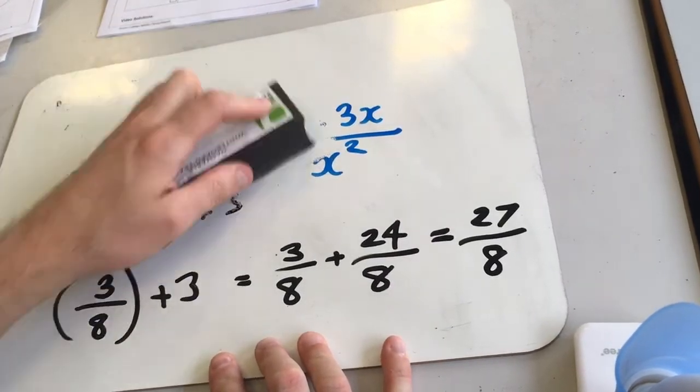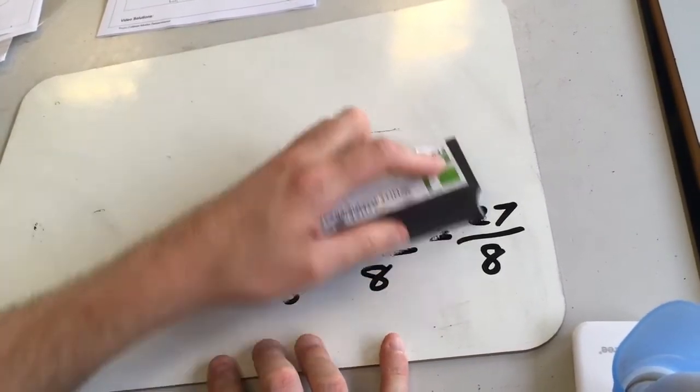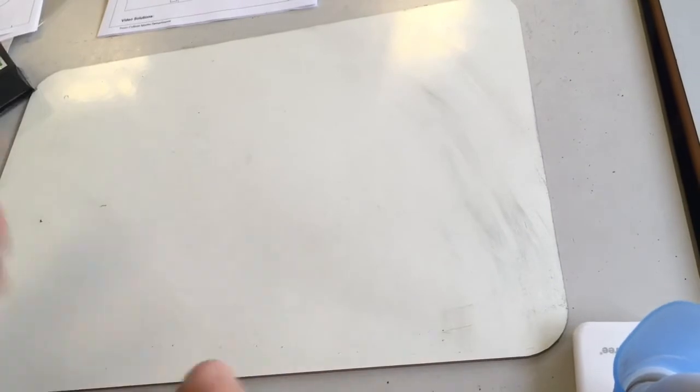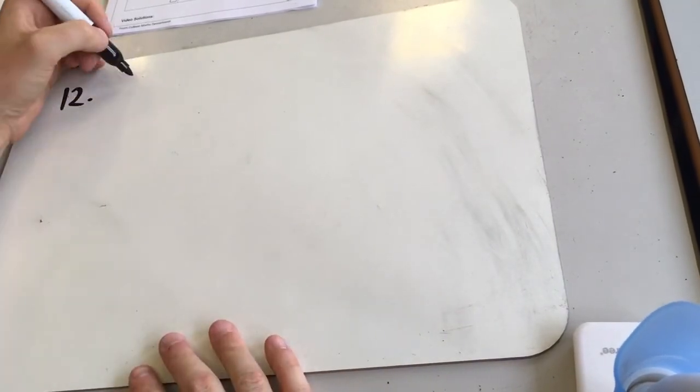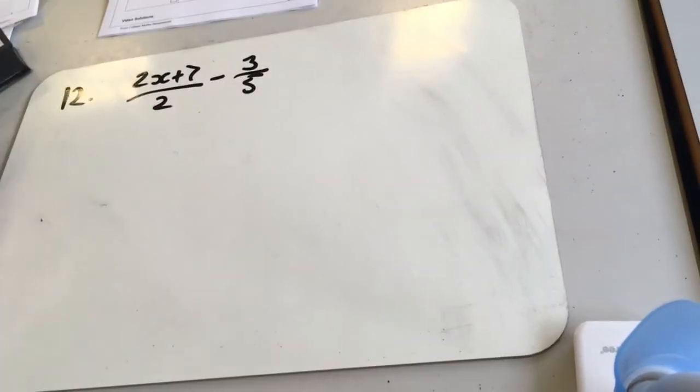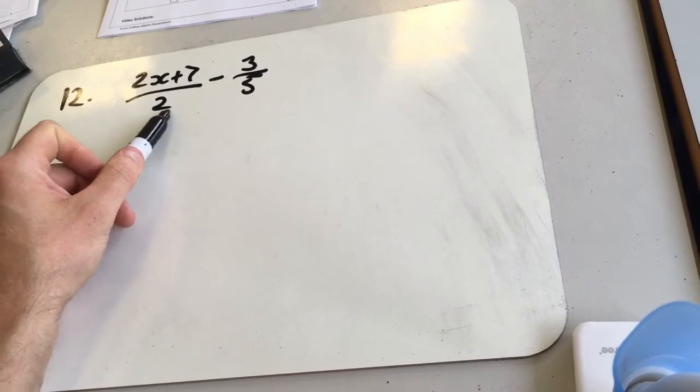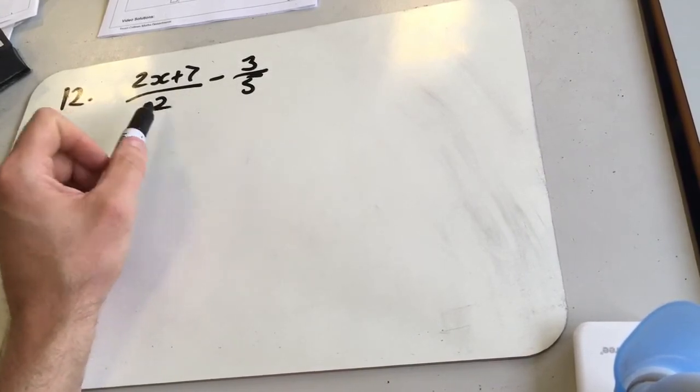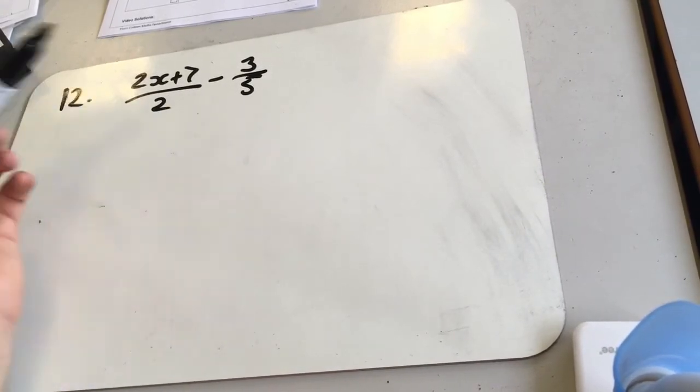Right, last one. 2x plus 7 over 2, take 3 fifths. So we again need to find a common denominator. So the best common denominator for 2 and 5 is going to be times them together. So we get a common denominator of 10.